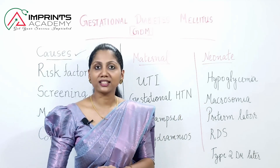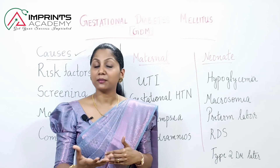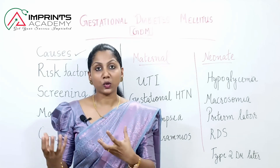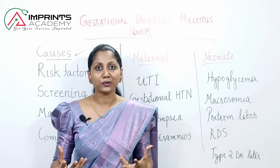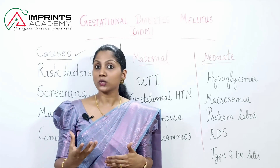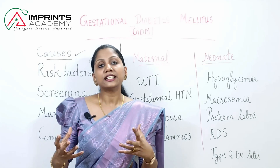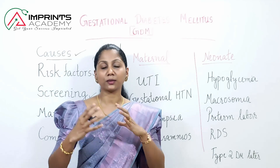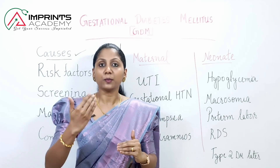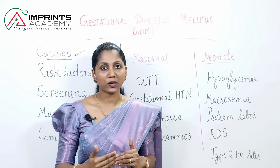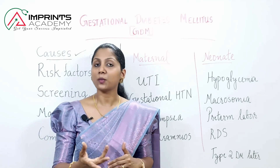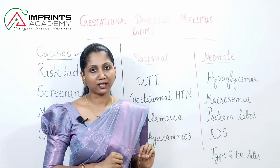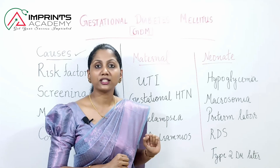Another neonatal complication is macrosomia — birth weight of more than 4 kg — because the fetus produces extra insulin in response to high glucose, promoting growth. Macrosomia can lead to shoulder dystocia during delivery, where the baby's anterior shoulder becomes stuck behind the mother's pubic symphysis bone. This may result in complications and the need for a cesarean section. A third complication is preterm labor.